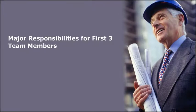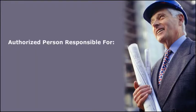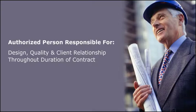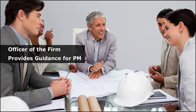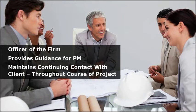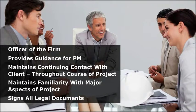Major responsibilities for the first three team members are as follows. First, we'll discuss the principal in charge. The principal in charge is the firm's most senior management representative for the project and is the authorized person responsible for the design quality and client relationship throughout the duration of the contract. He or she is responsible to the client and to the firm for the successful execution of the project. The principal in charge is an officer of the firm, provides guidance for the activities of the project manager, maintains continuing contact with the client throughout the course of the project, maintains familiarity with major aspects of the project, and signs all legal documents referencing the project for the firm.